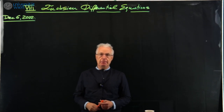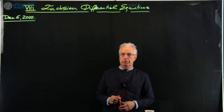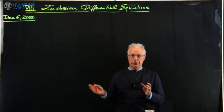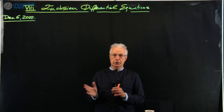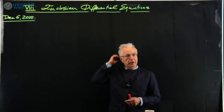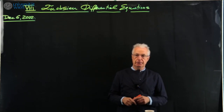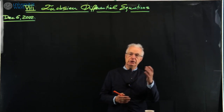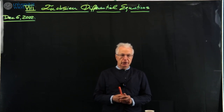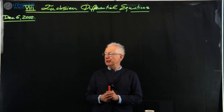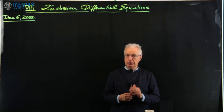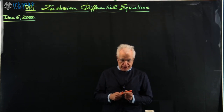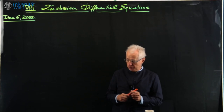We started last time with differential equations in positive characteristics. Today we will move first towards the algebraicity of solutions in characteristic zero, actually over an arbitrary field, and then we will move on to the characterization of algebraic solutions through the reduction modulo p of the differential equation. Some of you may have already heard part of what we are doing today, because there's a slight overlap with the class I gave two years ago, but in any case I think it's nice mathematics and I hope you will enjoy.